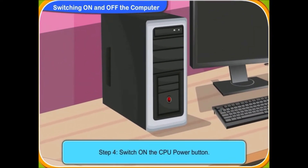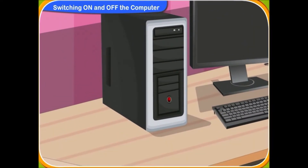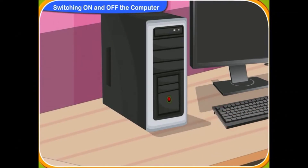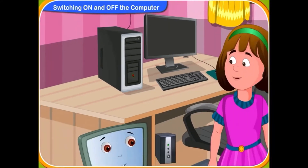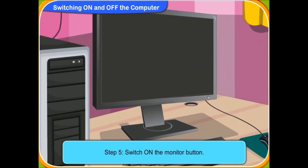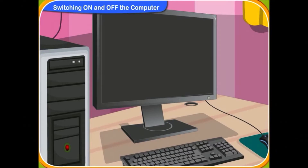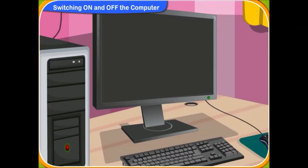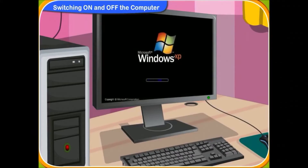Now, switch on the CPU power button. Yes, I have pressed the power button on the CPU. I can hear a faint noise inside the box. It is the CPU starting up. Now, switch on the monitor button. Yes, I have switched it on. A green light is glowing. But nothing has appeared on the screen. Relax Rini, it may take some time to show the main screen as the system is booting up.